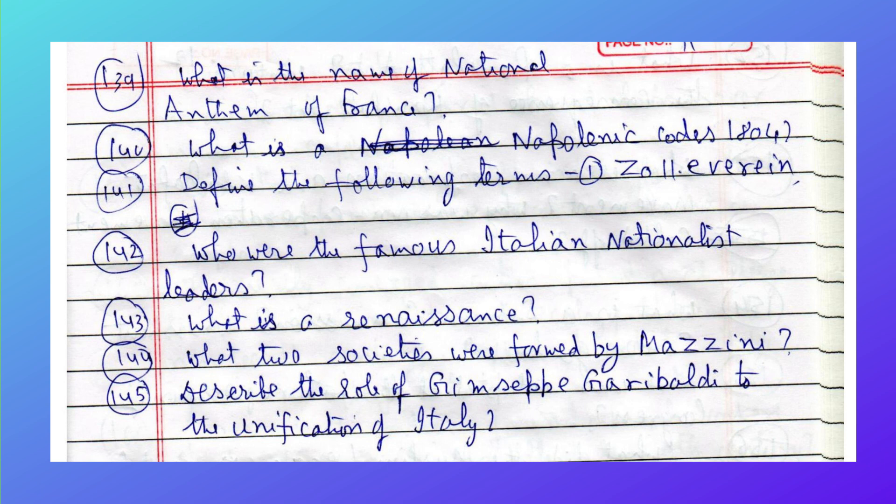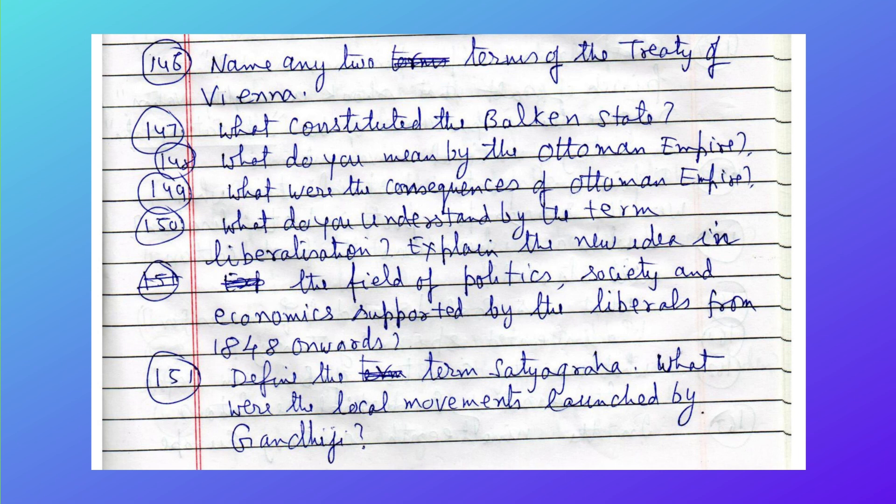Define the following term: Zollverein. Who were the famous Italian nationalist leaders? What is the Risorgimento? What two societies were formed by Mazzini? Describe the role of Garibaldi in the unification of Italy. Name any two terms of the Treaty of Vienna. What constituted the Balkan state?